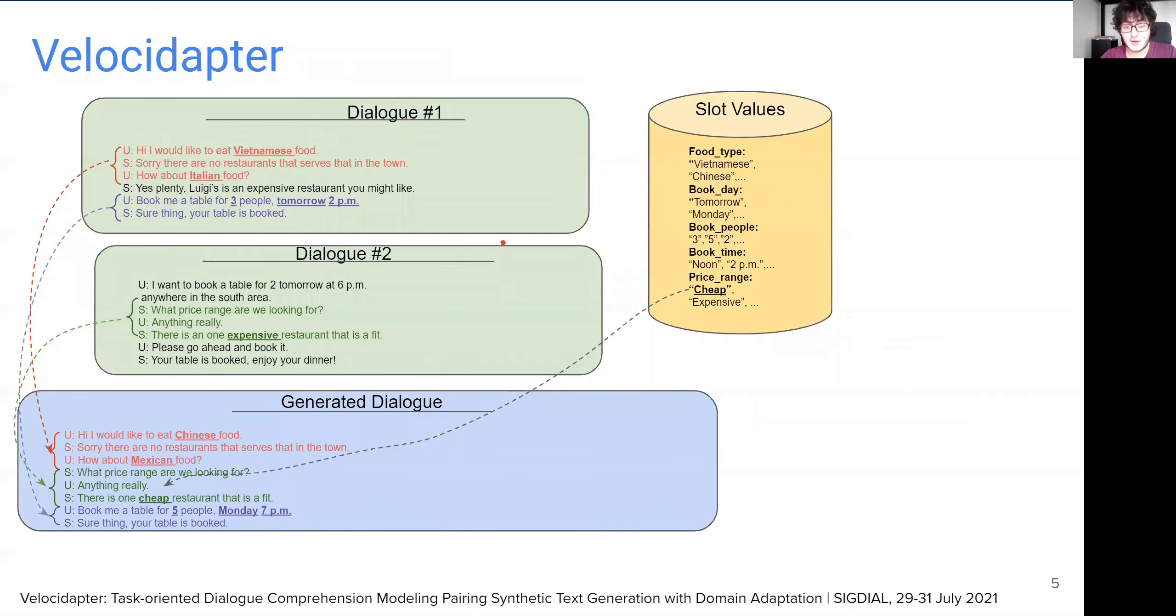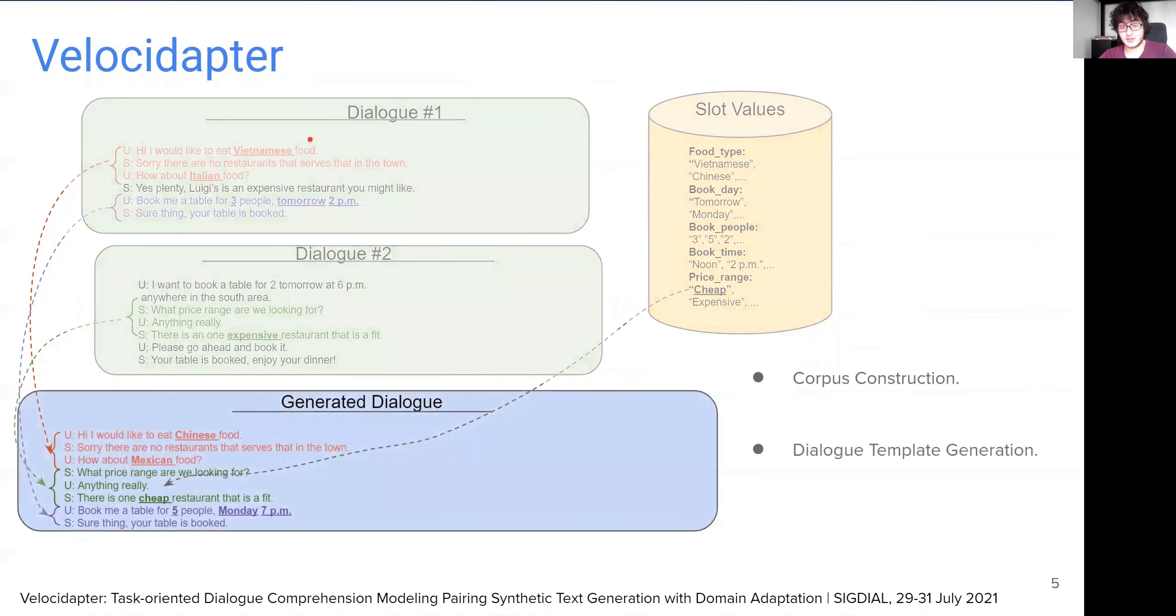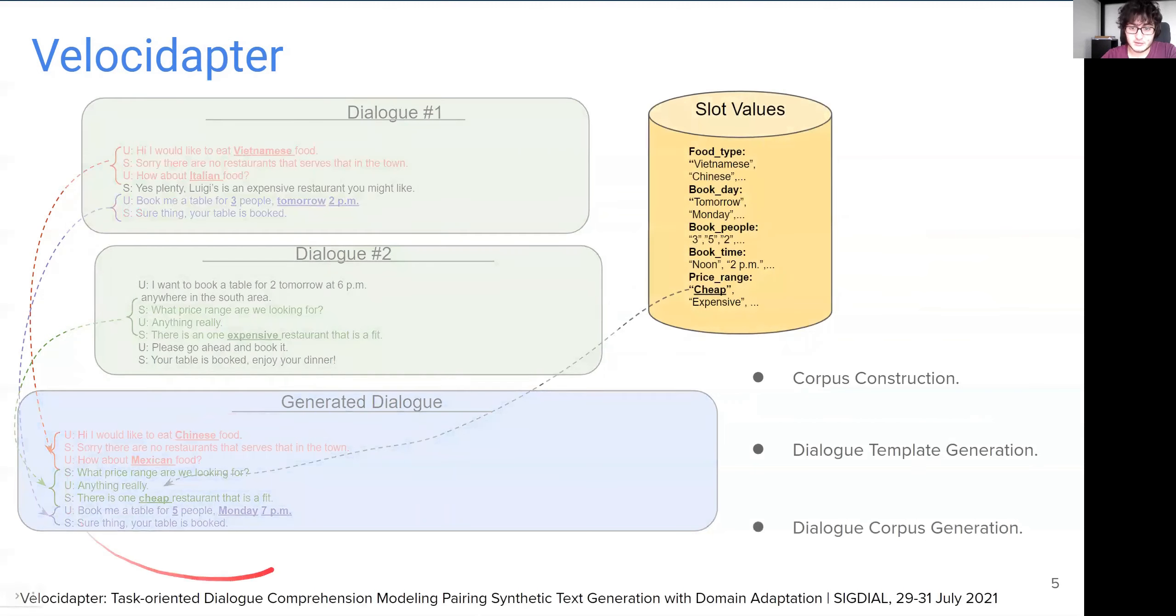VelocAdapter is a data generation framework that takes as input a list of manually provided dialogue chunks and outputs instantiated dialogues. And there are three sequential steps for the generation process. The first one is corpus construction, where a human annotator divides a few development dialogues into chunks according to slots discussed in each. Then comes dialogue template generation, where our framework sticks these chunks together to create dialogue templates. And finally, dialogue corpus generation, where we fill each template using an external set of surface values. So now, let's delve deeper into each step.